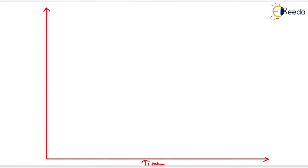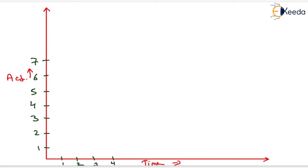Now we can prepare the chart. On the x-axis there will be time and on the y-axis there will be activity. We have a total of 7 activities, so we mark activity 1 through activity 7 on the y-axis. On the x-axis we mark duration in weeks: 1 week, 2 weeks, 3 weeks, 4 weeks, 5 weeks, 6 weeks, 7 weeks, 8 weeks, 9 weeks, 10 weeks, and 11 weeks.